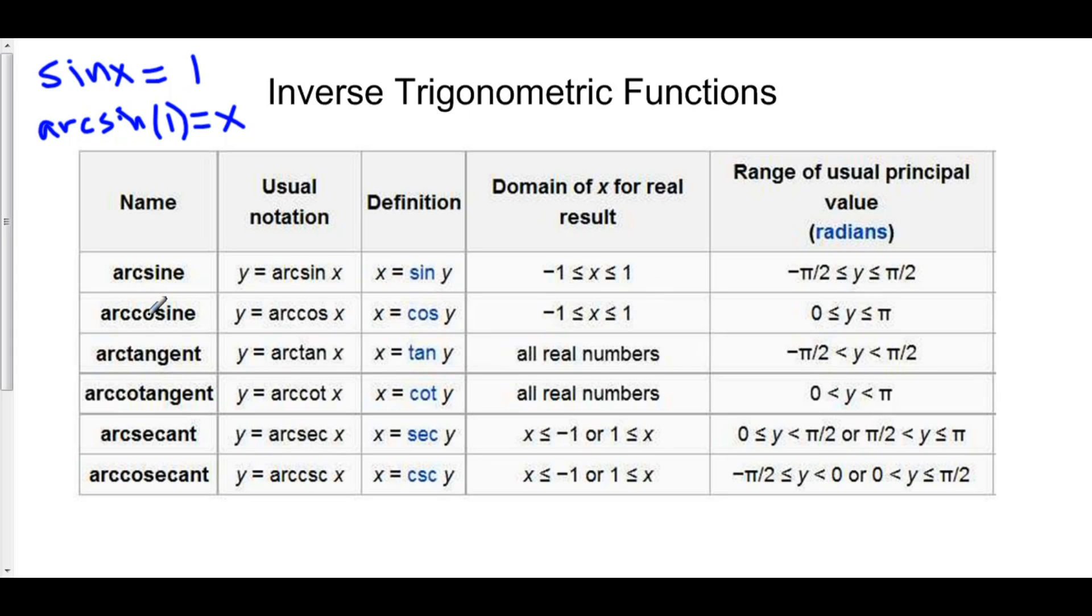Arc cosine is the inverse of cosine, and it exists from negative 1 to 1. Arc tangent is the inverse of tangent, and that exists for all real numbers.